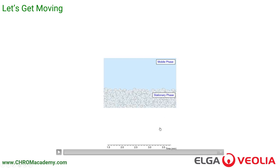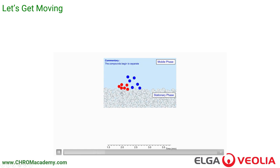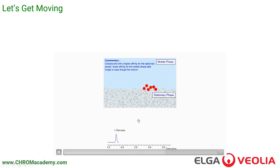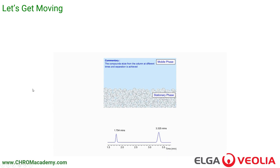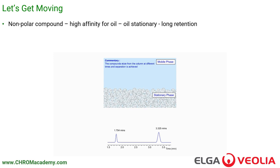If we look at what goes on at the stationary phase, we have a mixture of molecules that comes along. The red molecules have higher affinity for the stationary phase; the blue ones have less affinity. They start to separate as we move through the column. The first substance comes out at 1.7 minutes. The second substance, which is retained longer, comes out at 3.25 minutes. So we can use this dynamic process to separate out substances that have very similar chemical structures.